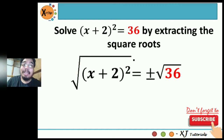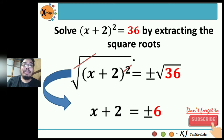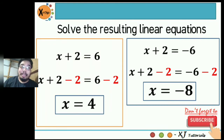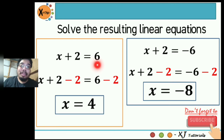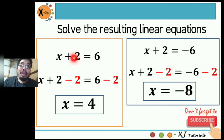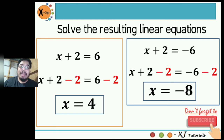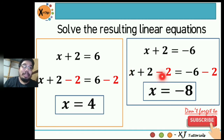The radical sign and exponent 2 cancel, leaving x plus 2 equals positive and negative 6. We solve the resulting linear equations separately. First equation: x plus 2 equals 6. Subtract 2 from both sides — x plus 2 minus 2 equals 6 minus 2 — so x equals 4. Second equation: x plus 2 equals negative 6. Subtract 2 from both sides — x plus 2 minus 2 equals negative 6 minus 2.